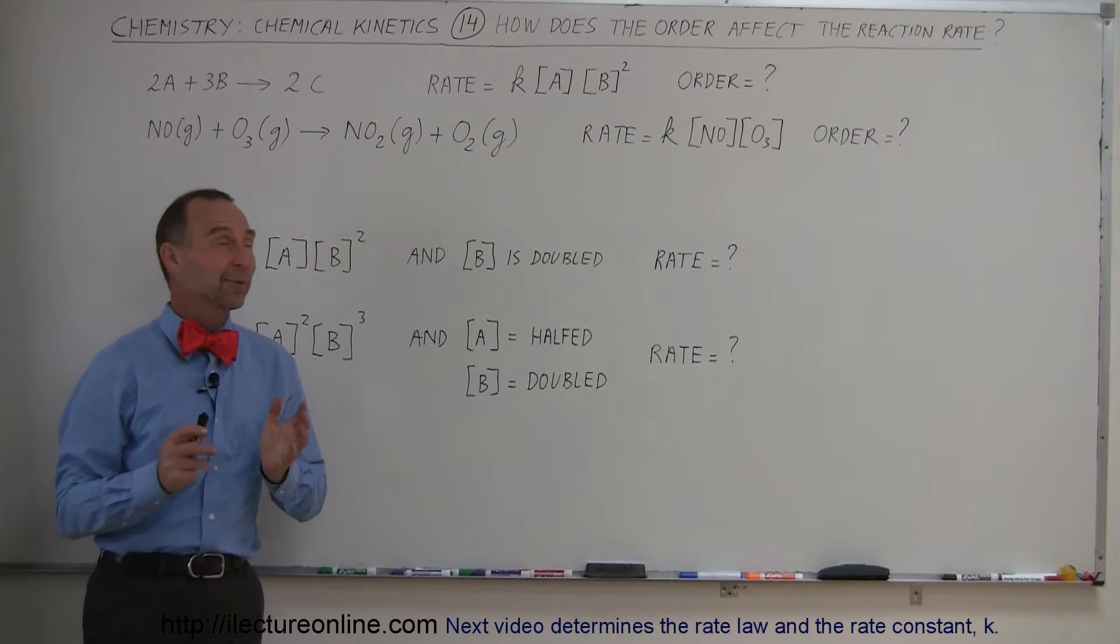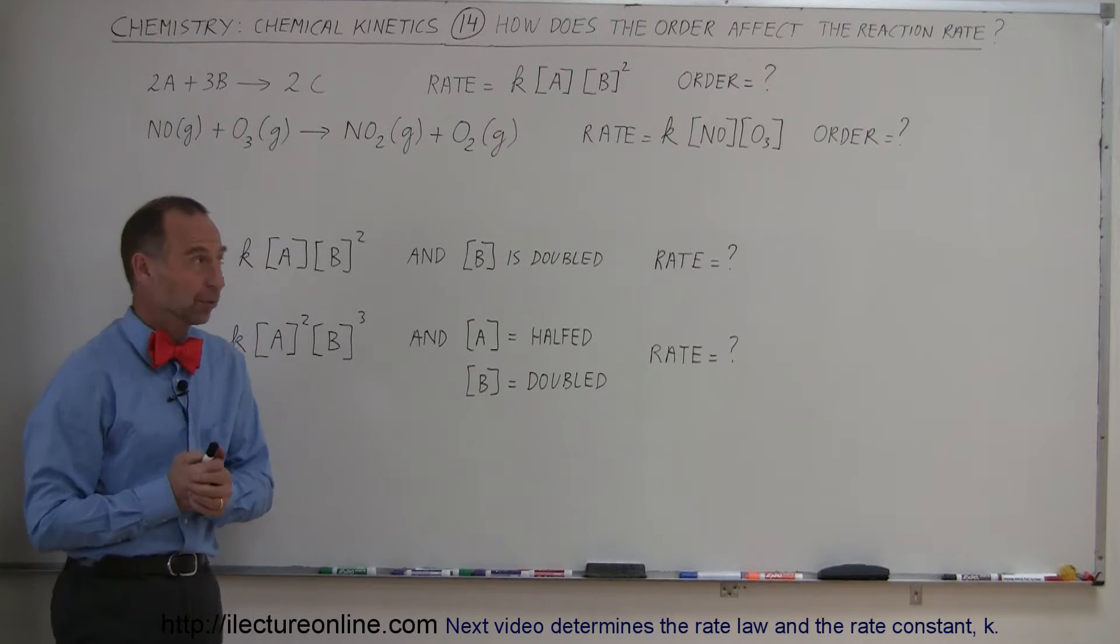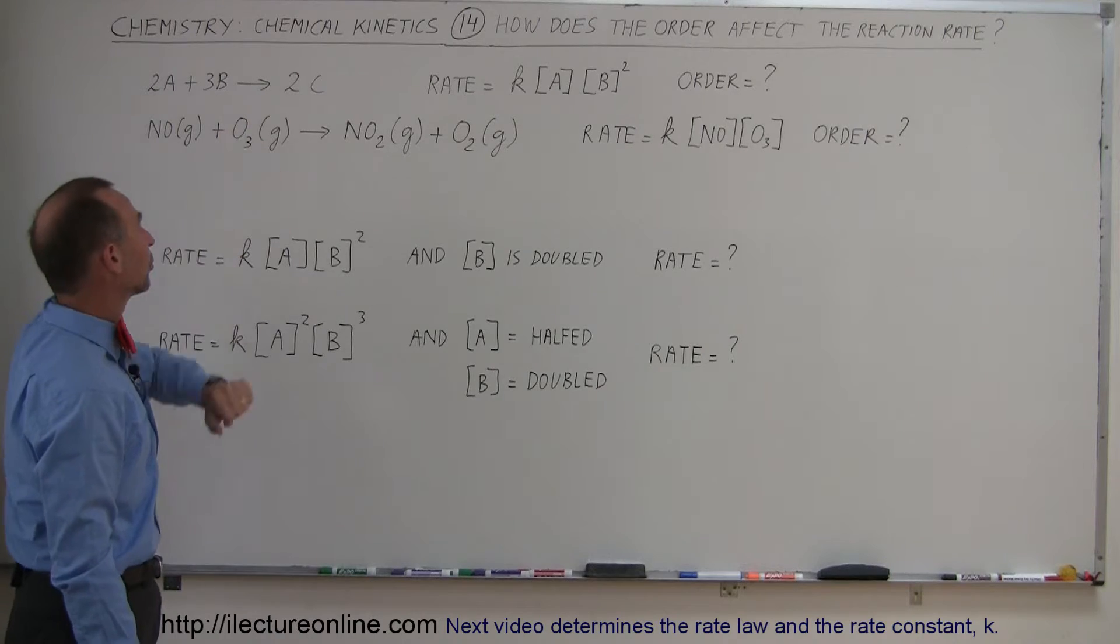Welcome to Electron Online, and now let's see if we learn how to deal with orders and how they affect reaction time. So let's say we have an equation. We have 2 of A and 3 of B required to form 2 of C.